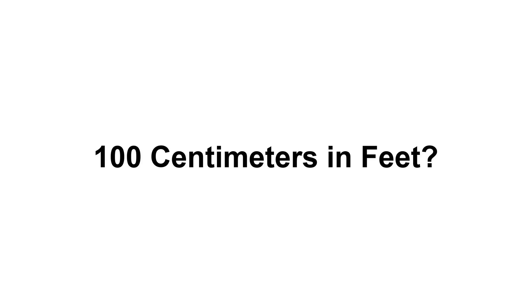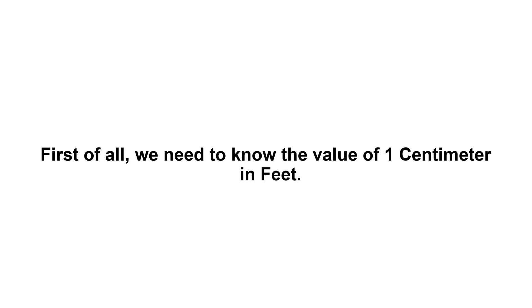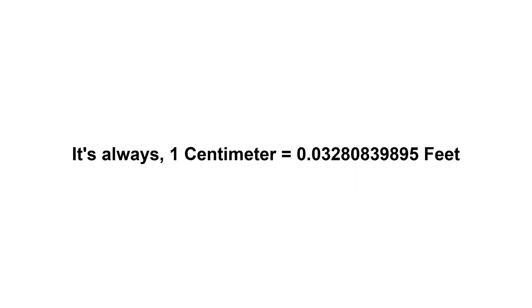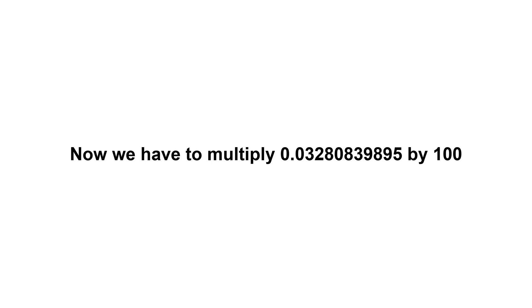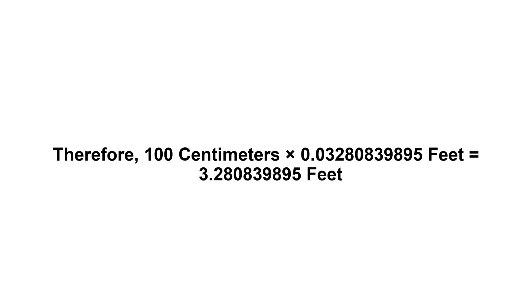100 centimeters in feet. First of all, we need to know the value of 1 centimeter in feet. 1 centimeter equals 0.03280839895 feet. Now we have to multiply 0.03280839895 by 100, therefore 100 centimeters times 0.03280839895 feet equals...